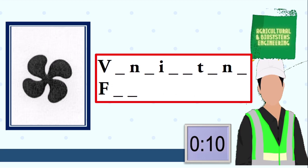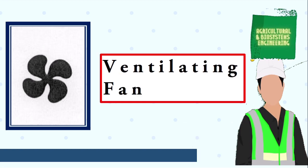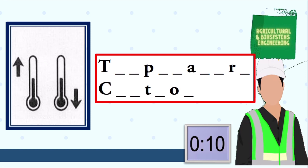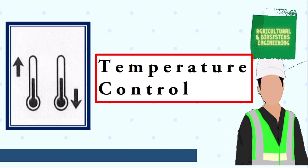Next symbol, your 10 seconds starts now. The answer is ventilating fan. Next symbol, your 10 seconds starts now. The answer is temperature control. Next symbol, your 10 seconds starts now.